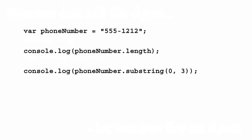Let's say we create a string, phoneNumber, and set its value to 555-1212. At this point, phoneNumber is a primitive string. But even though phoneNumber is not an object, we can use properties and methods, like length and substring, just like we could if it was an object.